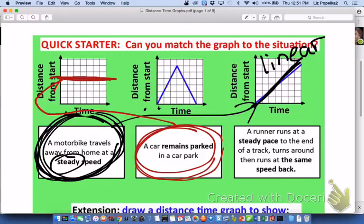Which means of course that our final graph, our final situation, has to represent the one in the middle but let's make sure we understand why. So a runner runs at a steady pace, turns around and then runs back at the same speed.